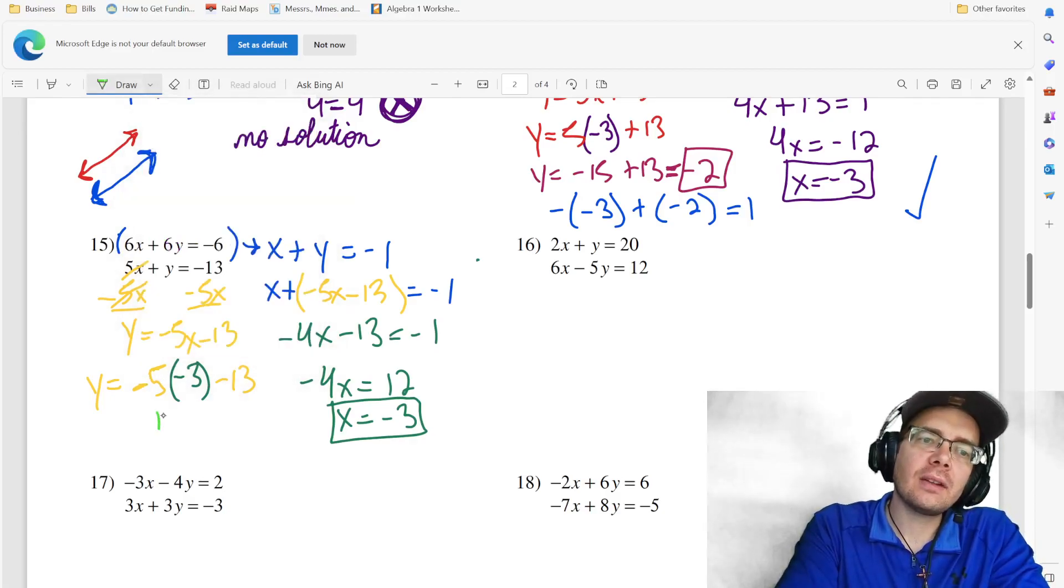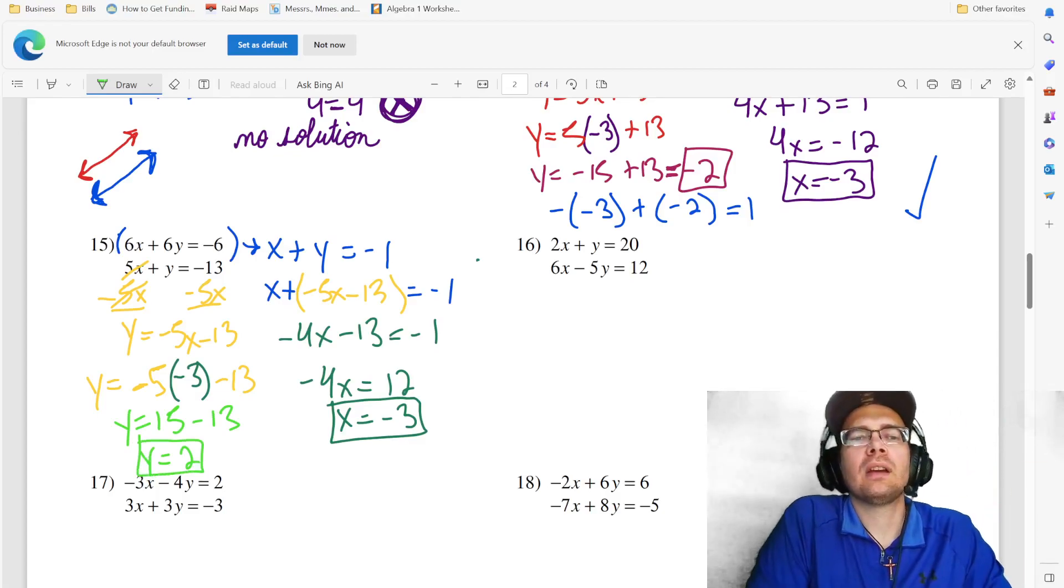Make sure you get both of them because they typically want both of the answers. So negative five times negative three is positive 15 minus 13 is going to be two.